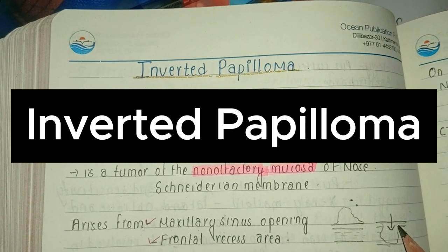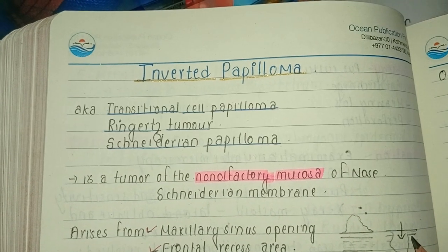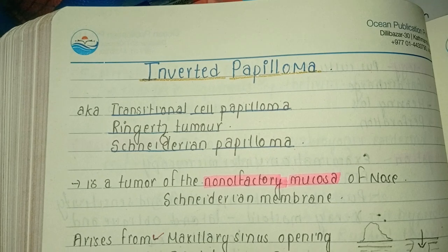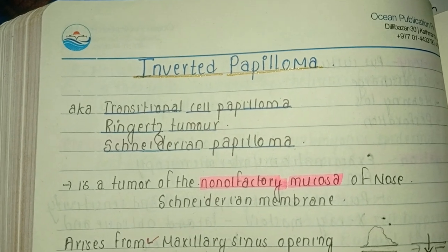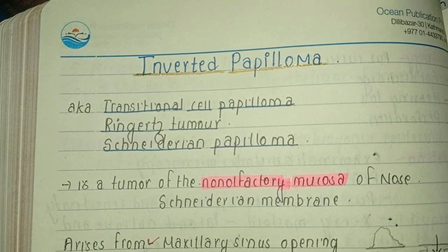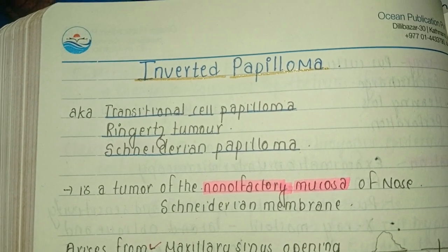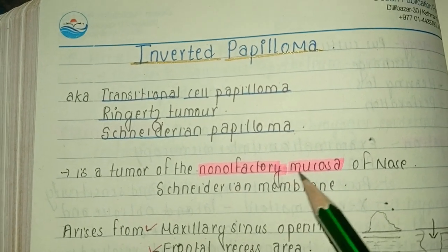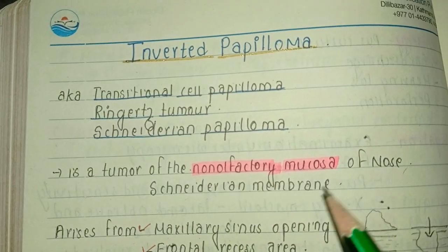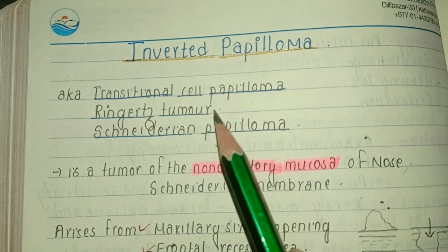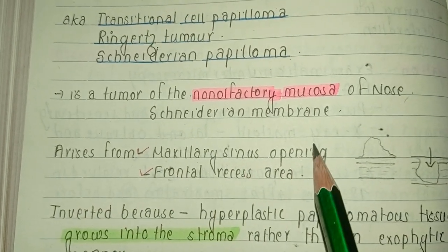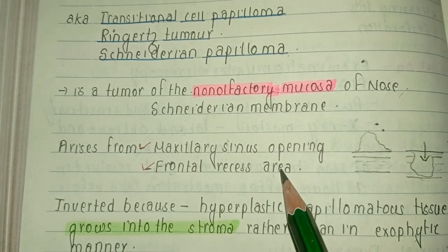Let's have a discussion on inverted papilloma. Inverted papilloma is also known as transitional cell papilloma, Ringertz's tumor, or Schneiderian papilloma. It is a tumor of the non-olfactory mucosa of the nose, also called the Schneiderian membrane, hence the name Schneiderian papilloma. It arises from the maxillary sinus opening or the frontal recess area.